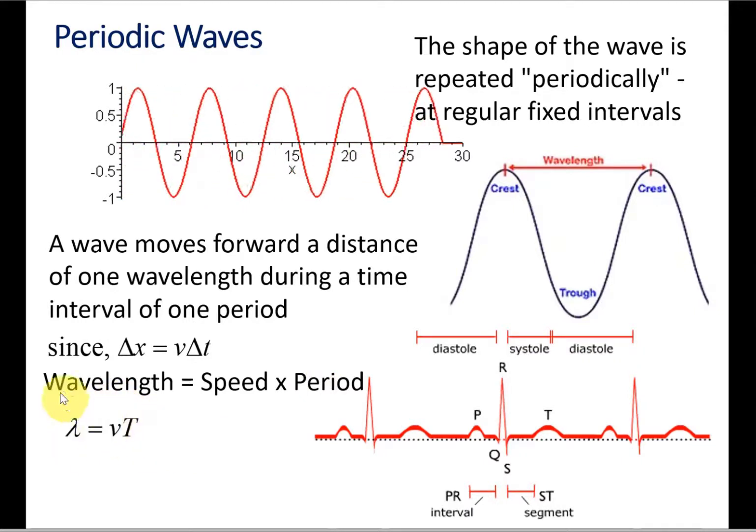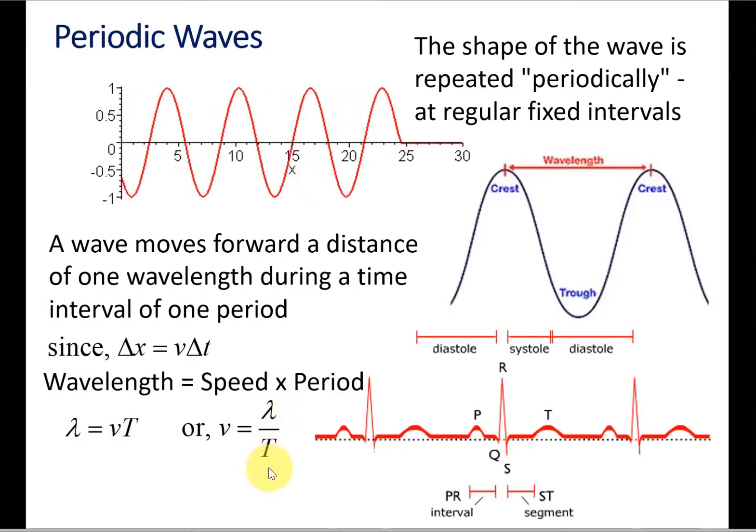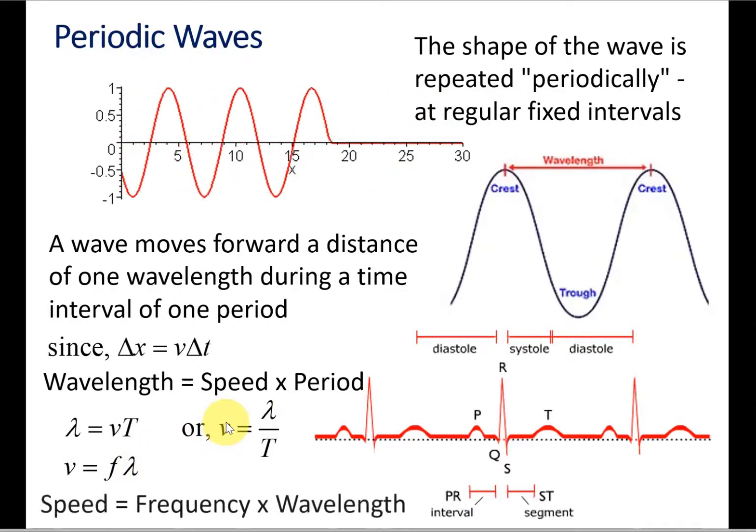If I rearrange this equation by moving the period to the side of the wavelength, I get 1 over T. Now I can replace that 1 over T by frequency, lowercase f. So this is the wave equation: speed is frequency times wavelength, v = fλ.